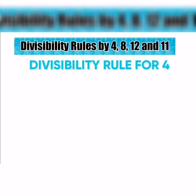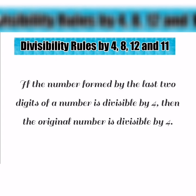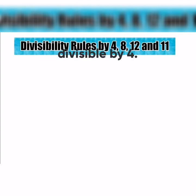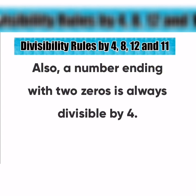Divisibility Rule for 4: If the number formed by the last two digits of a number is divisible by 4, then the original number is divisible by 4. Also, a number ending with two zeros is always divisible by 4.